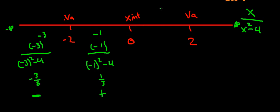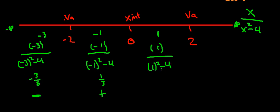We can use our symmetry property — since this is an odd function, the intervals on either side of the origin will have opposite signs. So the interval (2, ∞) is going to be positive, which is +3/5, the opposite of (-∞, -2). It'll make more sense when I put the graph up.